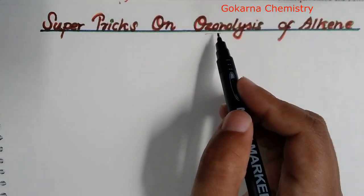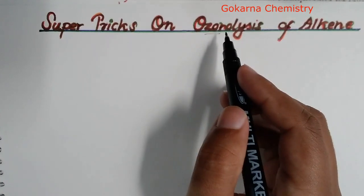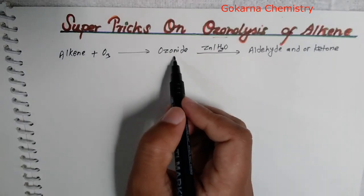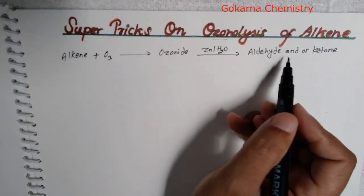First of all, we are going to study ozonolysis of alkene. What is the theory of ozonolysis of alkene? Alkene plus O3 gives ozonide, and zinc hydrolysis gives aldehyde and ketone.